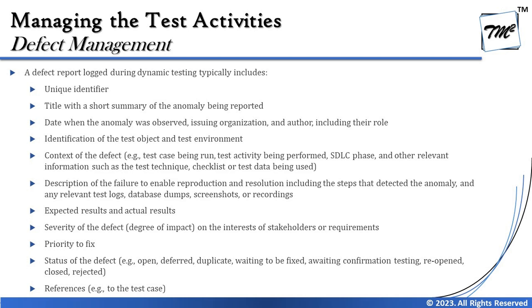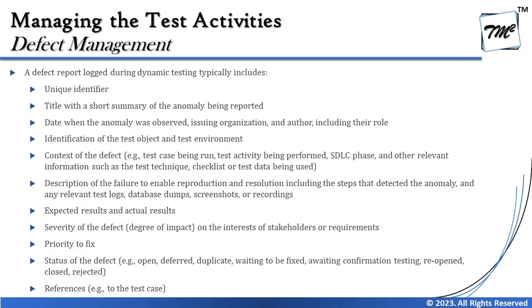Further fields include identification of the test object and environment — the test object is the item being tested, and the environment indicates where the defect was identified, since there are many different staging environments. Also included is context of the defect: the test case being run, the activity being performed, the phase, and other relevant information such as the technique that helped find it. Include any information that helps someone understand, identify, or reproduce the defect.